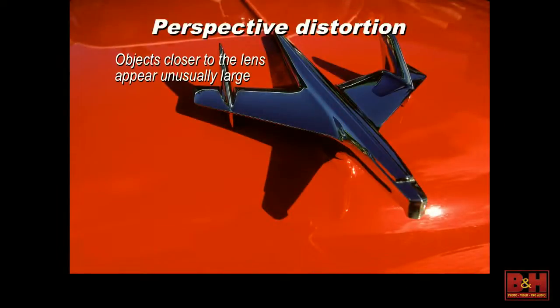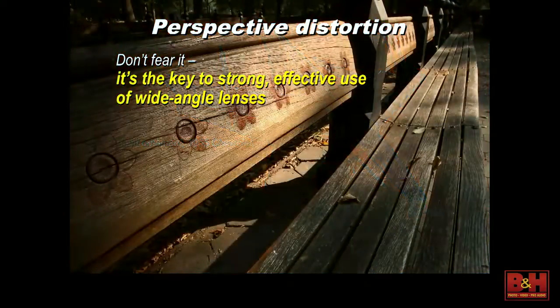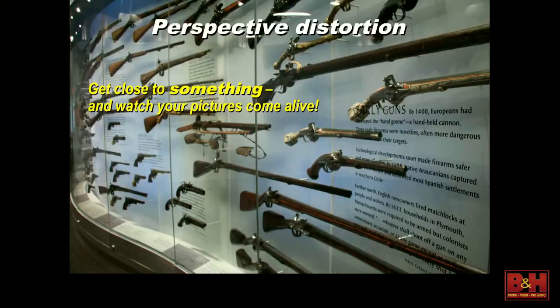Wide angle gives the viewer a look that our naked eyes don't see. Things close to the camera look larger proportionally than things further away — this is called perspective distortion. A lot of people hear the word 'distortion' and they freak out, but that's actually the reason ultra-wide lenses have such visual potential. When you go ultra-wide, get close to something, and you will have images that figuratively speaking light up.